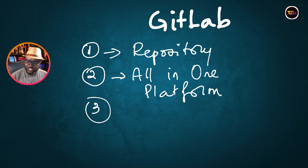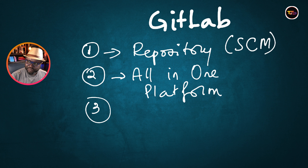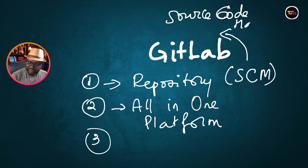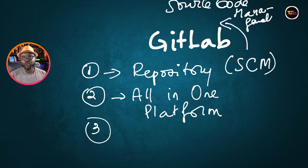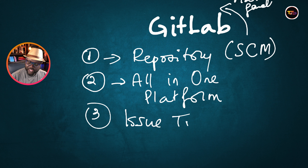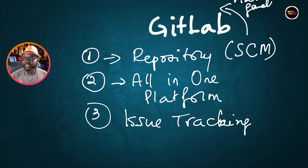When you talk about a repository, you're looking at what we call SCM — Source Code Management — which is a little bit similar to GitHub, but you also have issue tracking, which you don't have on GitHub. Issue tracking includes a system that allows team members to manage and track the progress of their work.